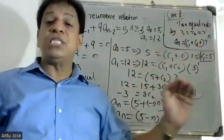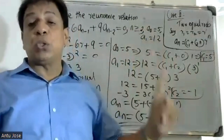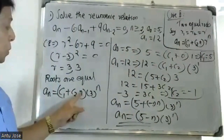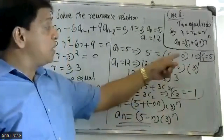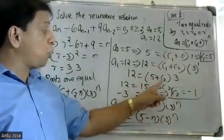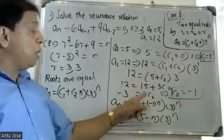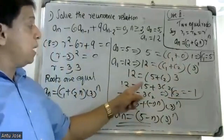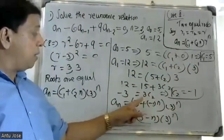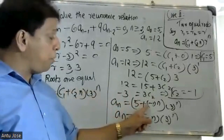Now substitute C1 = 5 into the second boundary condition. a(1) = (C1 + C2·1)·3 = (5 + C2)·3 = 12. So 12 = 15 + 3·C2, giving 3·C2 = 12 - 15 = -3, therefore C2 = -1.